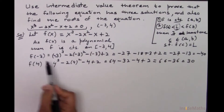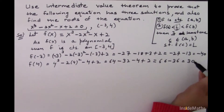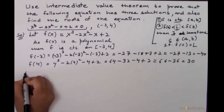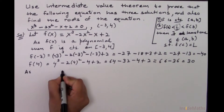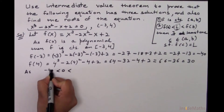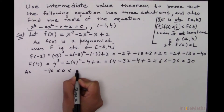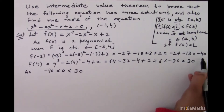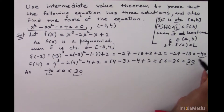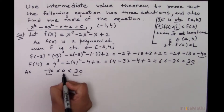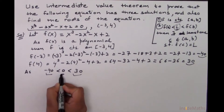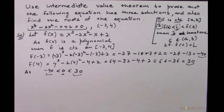Now if I find a value between these two points — f of a is minus 40 and f of b is 30 — I can take the point 0, which lies between minus 40 and 30. Since one value is negative and the other is positive, 0 lies between these two values.